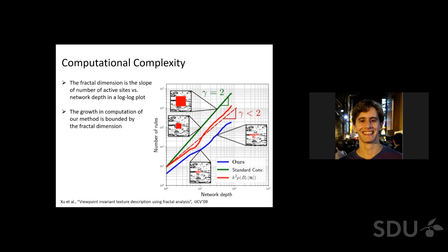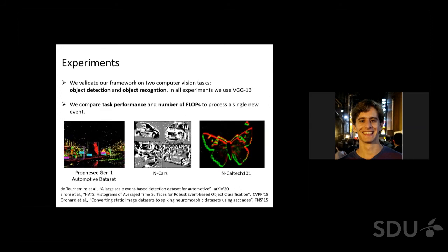To validate our approach, we test these asynchronous sparse convolutions on two computer vision tasks. One is event-based object detection and one is object recognition. To highlight the computational gains of our method, we compare the task performance of our method and the number of FLOPs necessary to generate a prediction after a single new event.